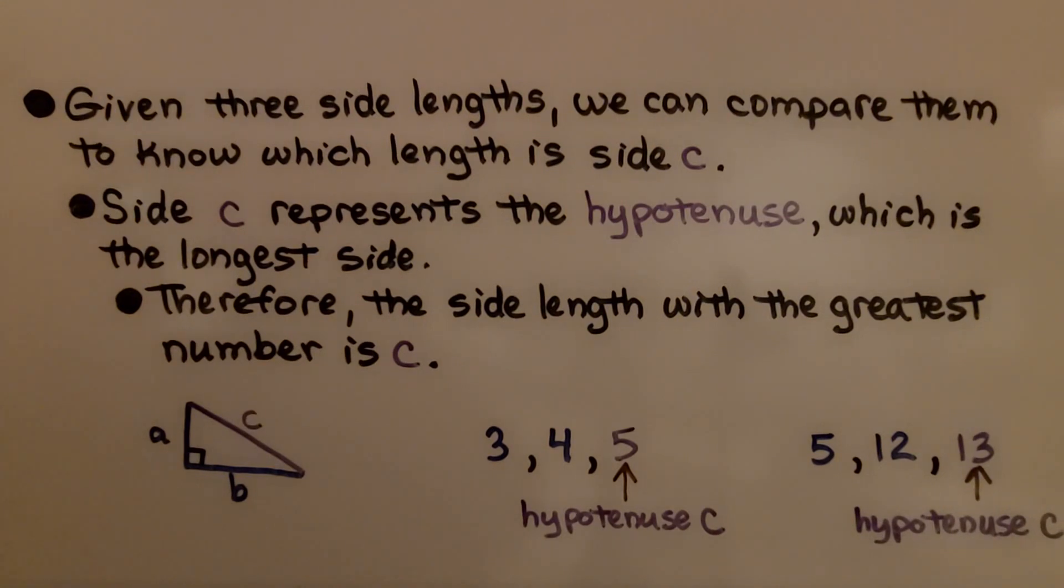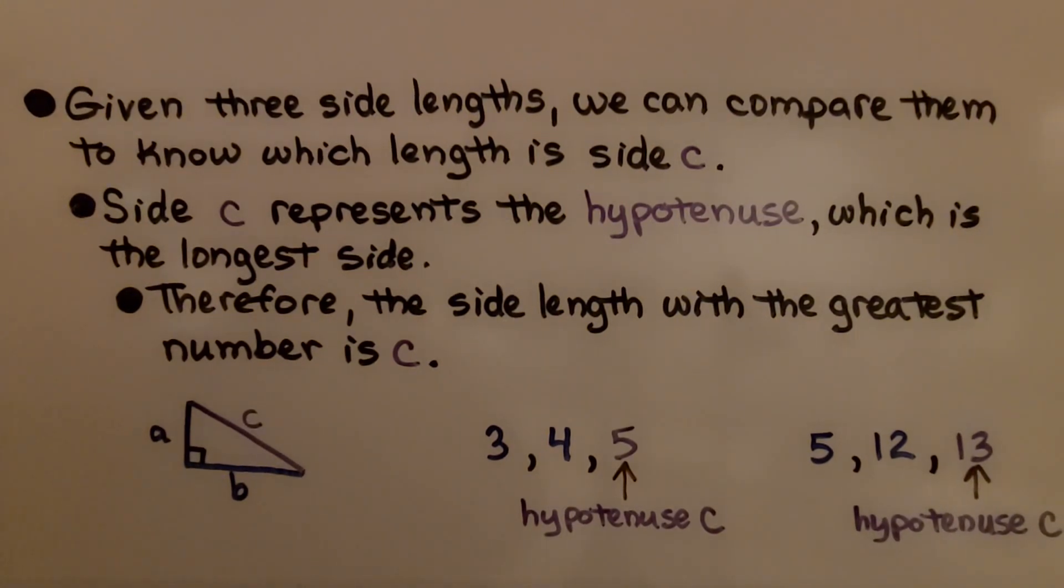Given three side lengths, we can compare them to know which length is side c. Side c represents the hypotenuse, which is the longest side. Therefore, the side length with the greatest number is c. We know that the hypotenuse is the longest side of a right triangle.